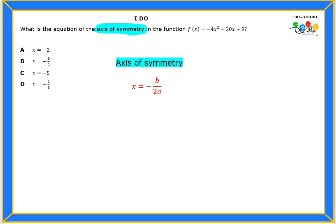So my formula is asking me to find a and b. Well, a and b, I can get them from the equation that was given to me, but I need to write down my standard form for quadratics. So once I do that, then I can identify my a and b. So a will be negative 4, and b will be negative 20.